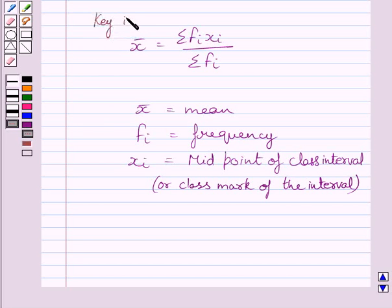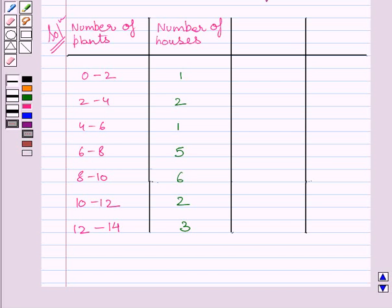And we will use this as our key idea to solve the given question. Let us now start with the solution. First of all, we will rewrite the data given in the question. Now the given data represents number of plants and number of houses. Now first of all, let us find out class mark that is XI for every class interval.